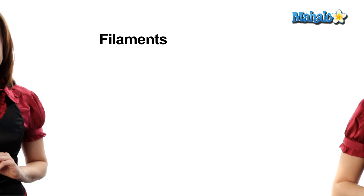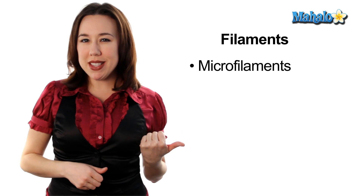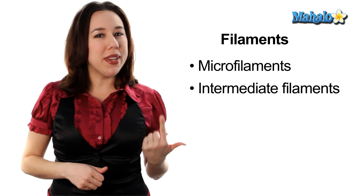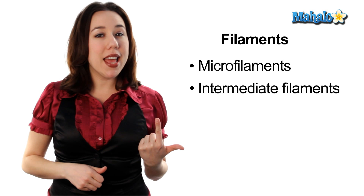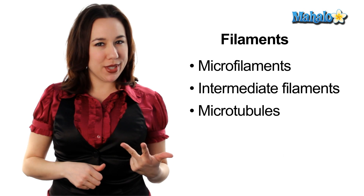In eukaryotic cells, like our own, there are three main types of filaments: microfilaments, intermediate filaments, and microtubules.